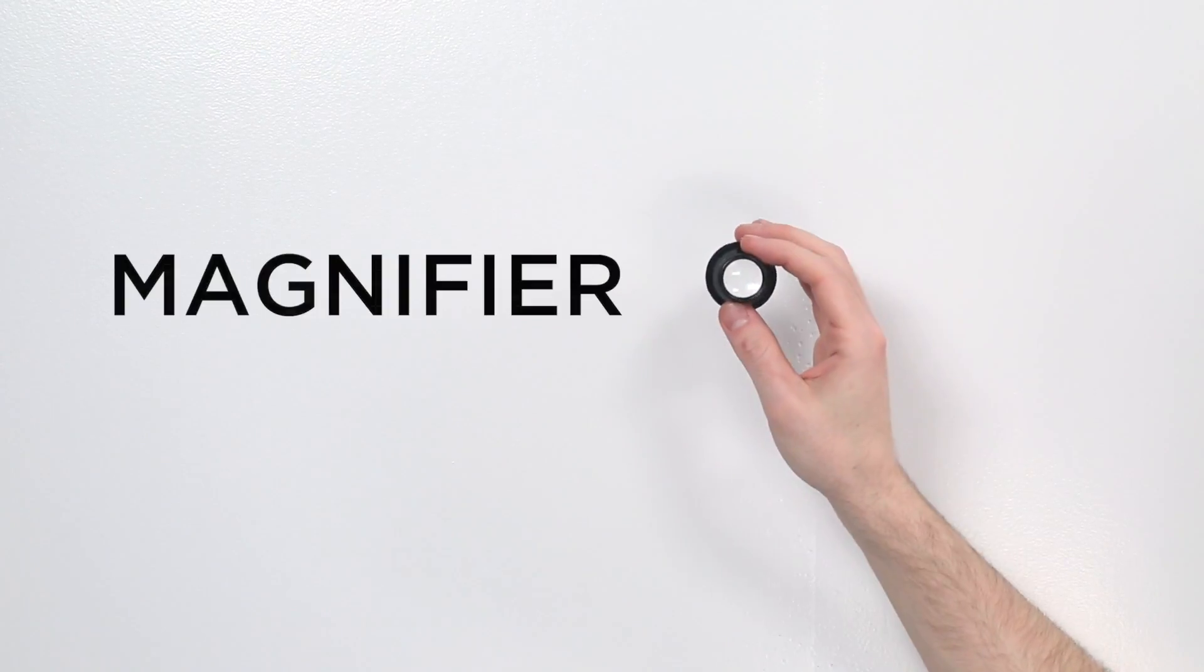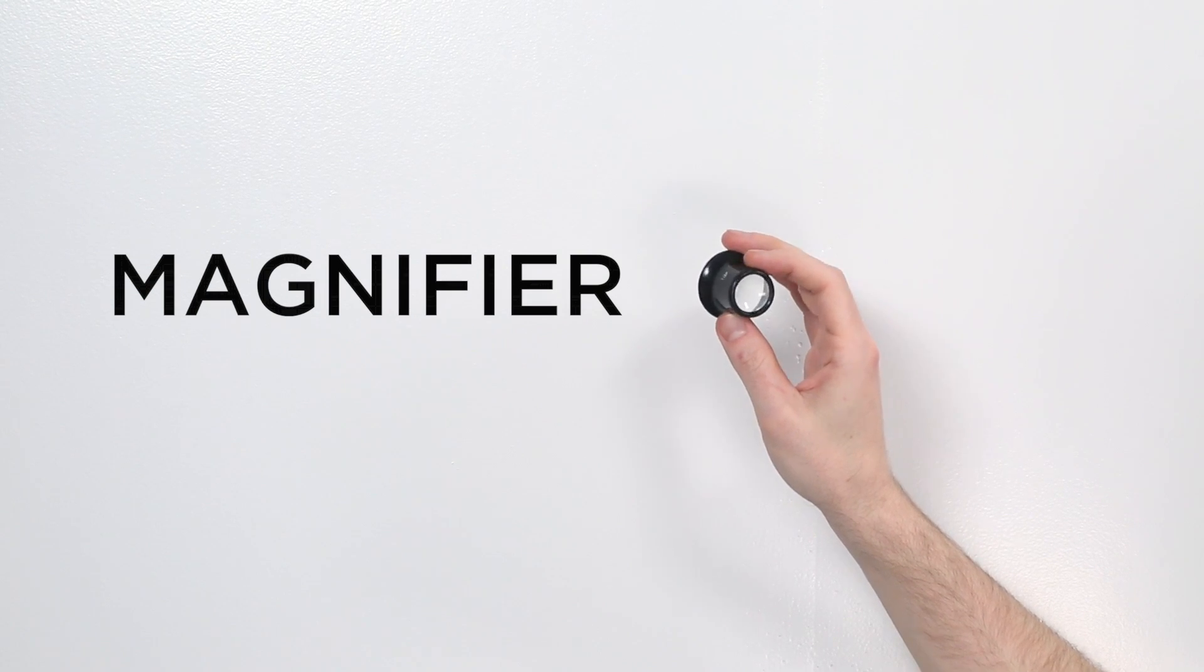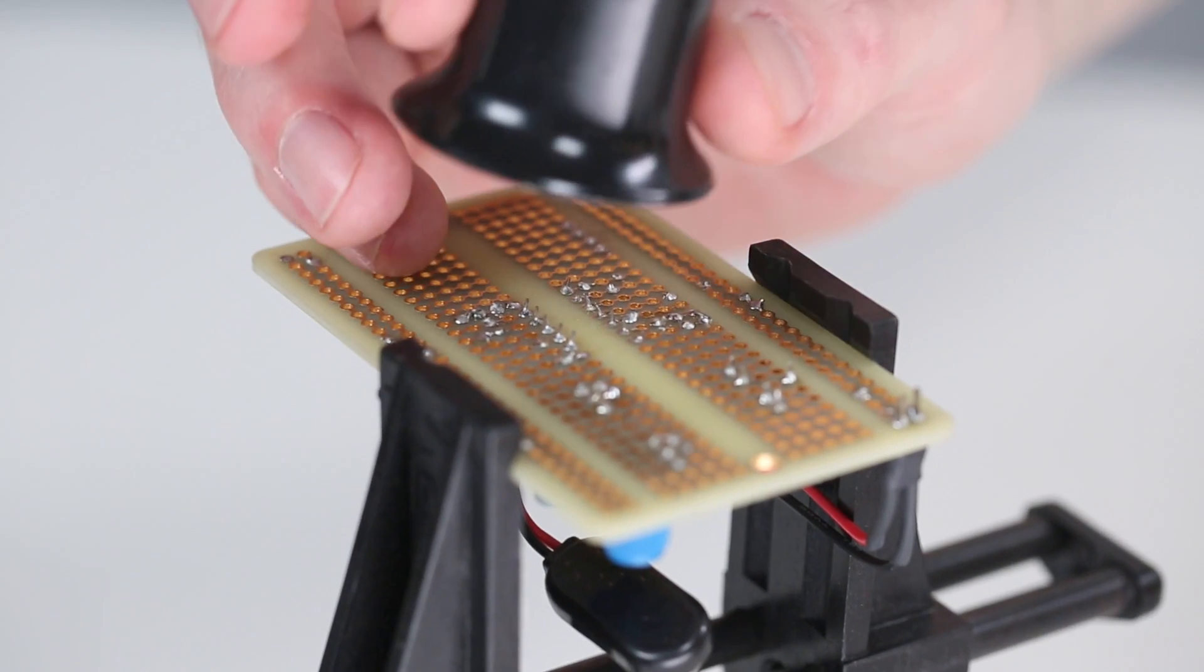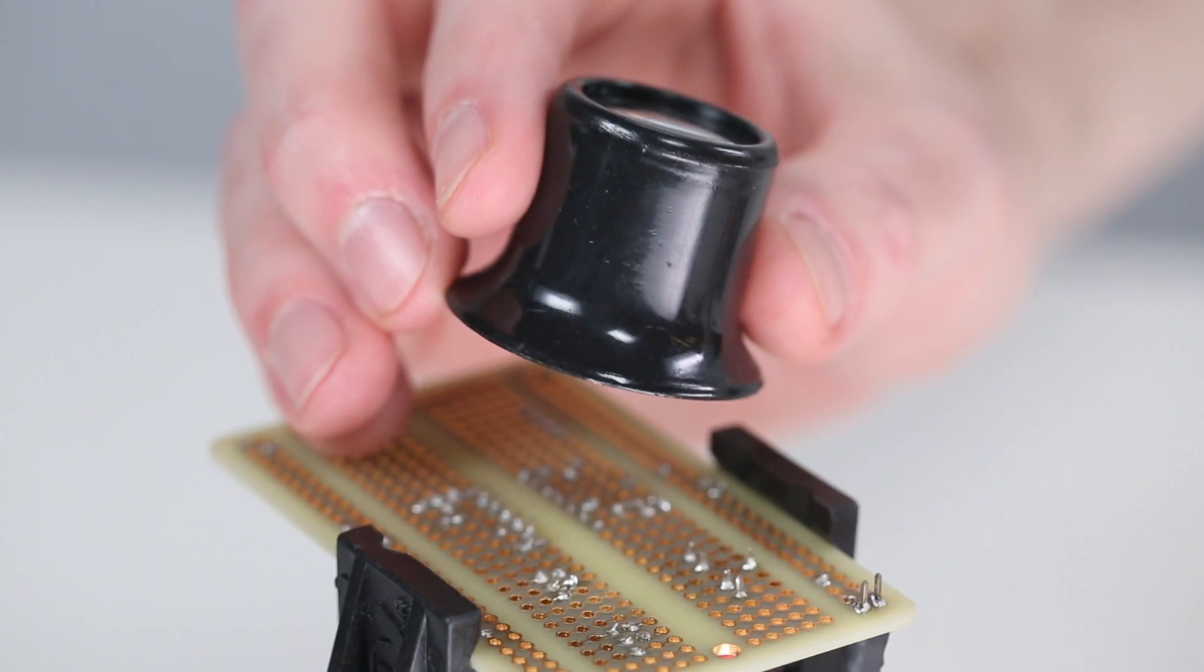Considering the size of our subject matter, you'll likely want some magnification. I keep a magnifier loop on hand for this. It's small and easy to move around a board. Great for checking a board for solder bridges.